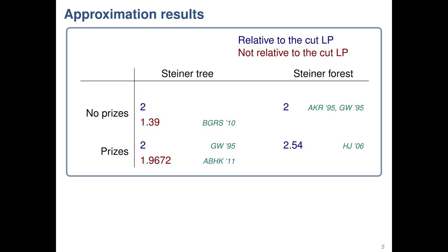The numbers in blue are relative to this basic cut LP. If we just have no prizes and just the Steiner tree problem, the cut LP has an integrality gap of 2 — that's tight. For Steiner forest, it's also 2, and that's tight. Of course, Byrka-Grandoni-Rothvoss-Sanità showed how to do better using a much stronger LP, but for the cut LP it's just 2.